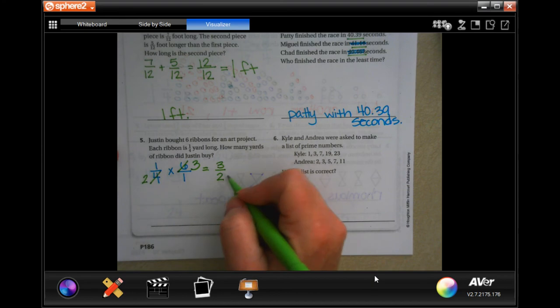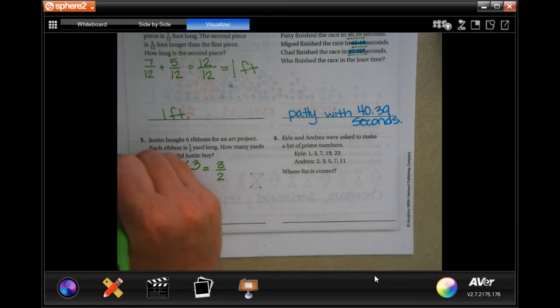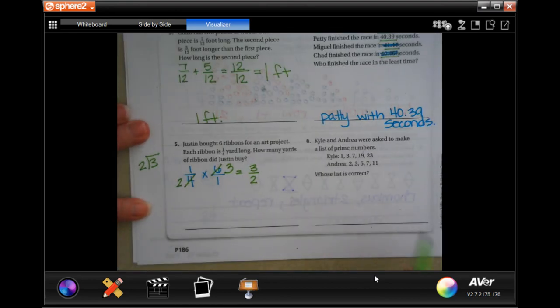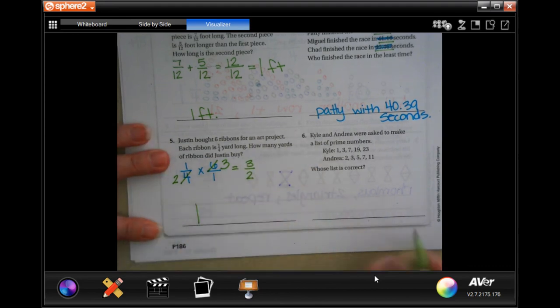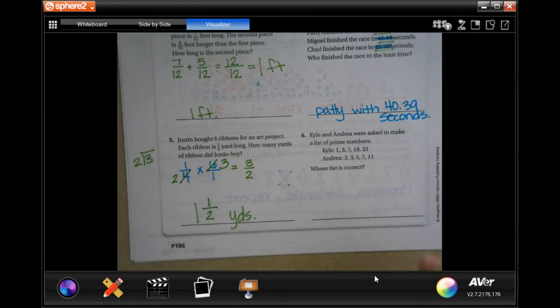Top number is bigger than the bottom number, I gotta go ahead and do some math here. If you need to go 3 divided by 2 and do that math, you go right ahead. I'm not going to, I'm gonna go 2 goes into 3, 1 time. 1 times 2 is 2. So, 3 minus 2 is 1, and then I keep my denominator, and we're being measured in yards.